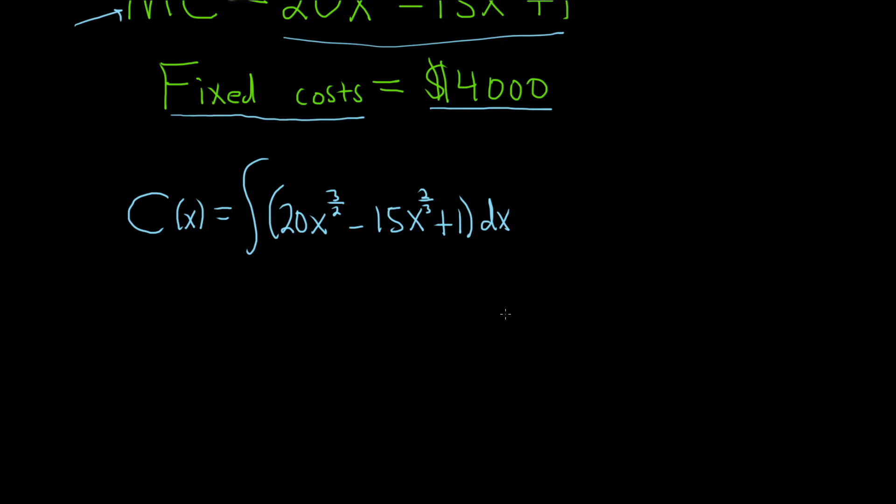All right, so all we have to do now is integrate each piece. So let's go ahead and do that. So 20 hangs out, and now we're going to integrate x to the 3 halves. So to do that, we're going to use the power rule. So we'll put the x here, and we're going to take this number and add 1.